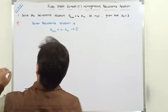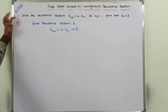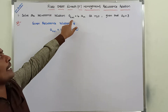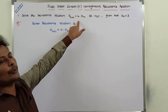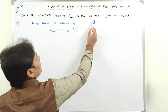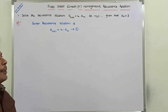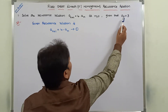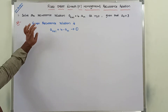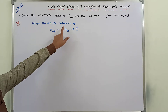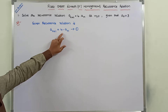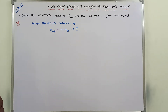So the given problem is: solve the recurrence relation a(n+1) = 4 · a(n), for n greater than or equal to 0, given that a₀ = 3. So the given recurrence relation is a(n+1) = 4 · a(n).